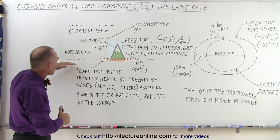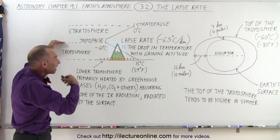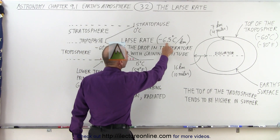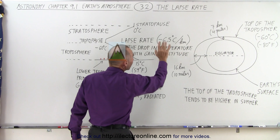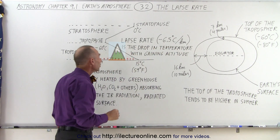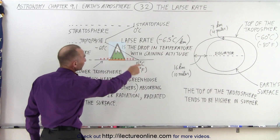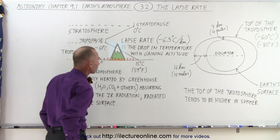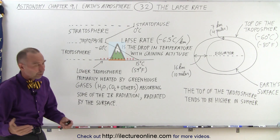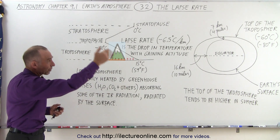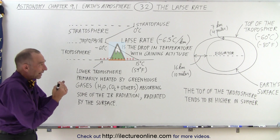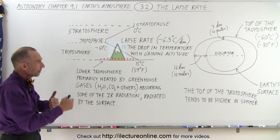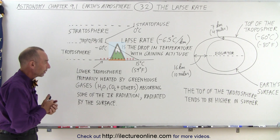If we assume the top of the troposphere is about 11 kilometers, which is kind of an average, then 11 times 6.5 gives us about 71 degrees — very close to the difference between the average surface temperature and the temperature at the top of the troposphere. Of course, depending on where we are on the Earth, that will look a little different, so it's not a fixed number. There are changes depending on the time of year and location around the Earth.